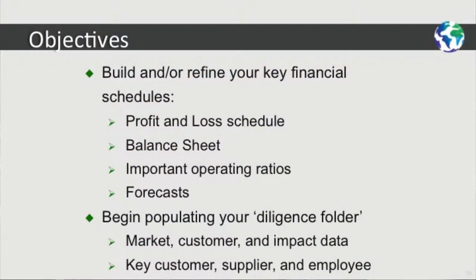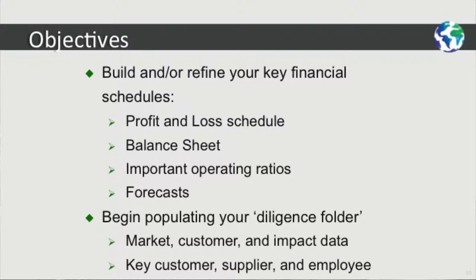Our objectives for you are to not only begin to assemble the key financial documents, but also begin to populate that diligence folder. The key financial documents are profit and loss statement, your forecasts, your balance sheet, key supplier relationships, and organizational description. Some of the diligence items to populate in your diligence folder include your measure of impact, key supplier relationships and contracts, employee contracts, previous financing documents, and so on.